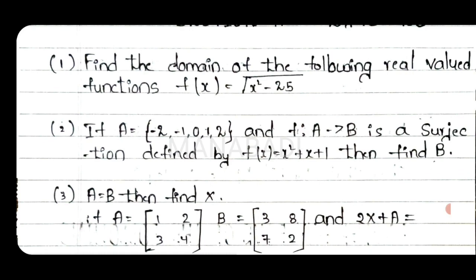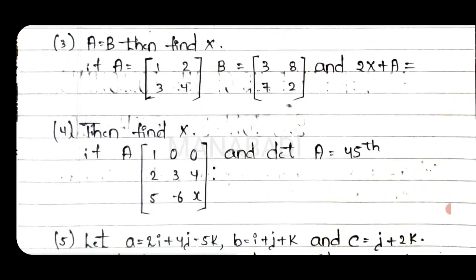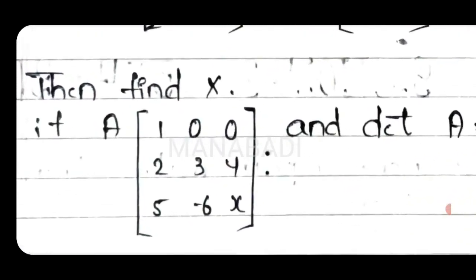Third question: we have a matrix, one equation — 2x plus A equals to that equation. Find x, where A matrix and B matrix are given and 2x plus A equals B.